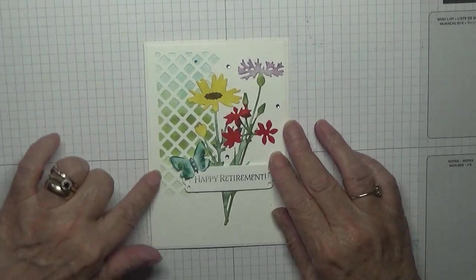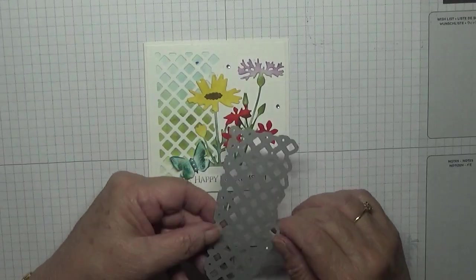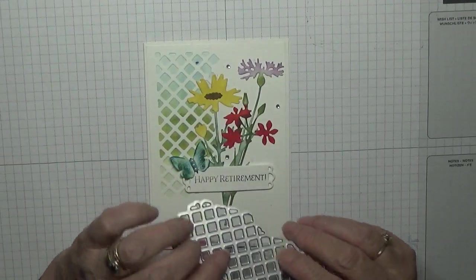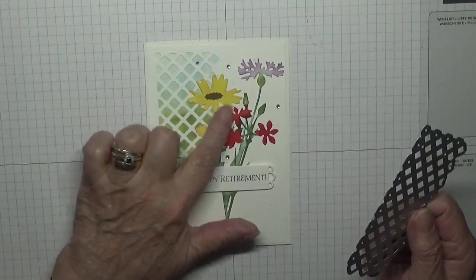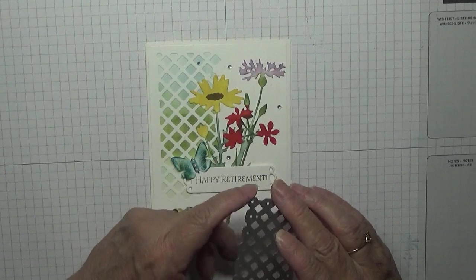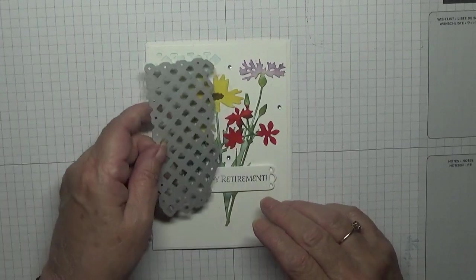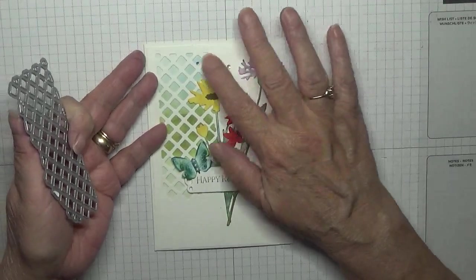And I used a die. Now it's not a Stampin' Up one, this is a Sizzix die I've had for years. And it's a cut-in die rather than a cut-out die. I couldn't find one in my Stampin' Up collection that was good enough for this. I found a small one in the Peaceful Poppies.